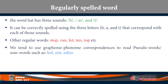We tend to use this regularity between phonemes and graphemes even to read pseudo-words or non-words which are created for use in psycholinguistic and neurolinguistic experiments. For instance, if you are asked to repeat a non-word like 'kol' or 'nin' or 'token,' we use this knowledge about phoneme-grapheme relationships to pronounce them — K-O-L is 'kol,' N-I-N is 'nin,' like that.